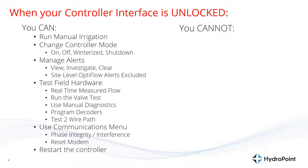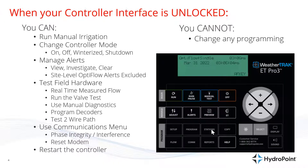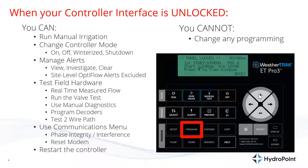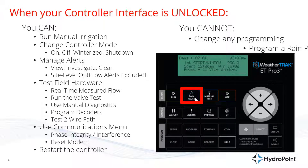Even though the panel is unlocked, certain features on that panel won't unlock. Specifically, you won't be able to make any programming changes — no station programming changes, no start times or water windows — because that information now belongs to the site and needs to be managed in the OptiFlow programming in the cloud using WeatherTrack Mobile or WeatherTrack.net. Also, the rain pause now belongs to the site.